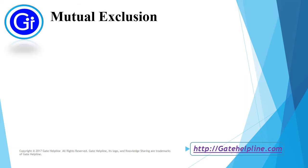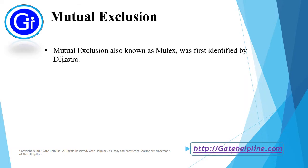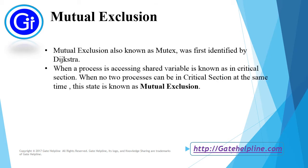So now we will see mutual exclusion. Mutual exclusion, also known as mutex, was first identified by Dijkstra. When a process is accessing a shared variable, it is known as being in a critical section, and when no two processes can be in the critical section at the same time, this state is known as mutual exclusion.